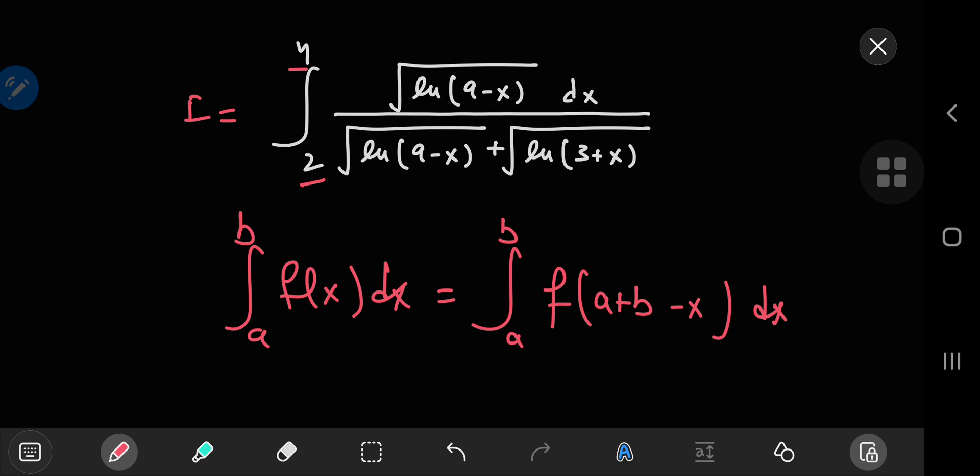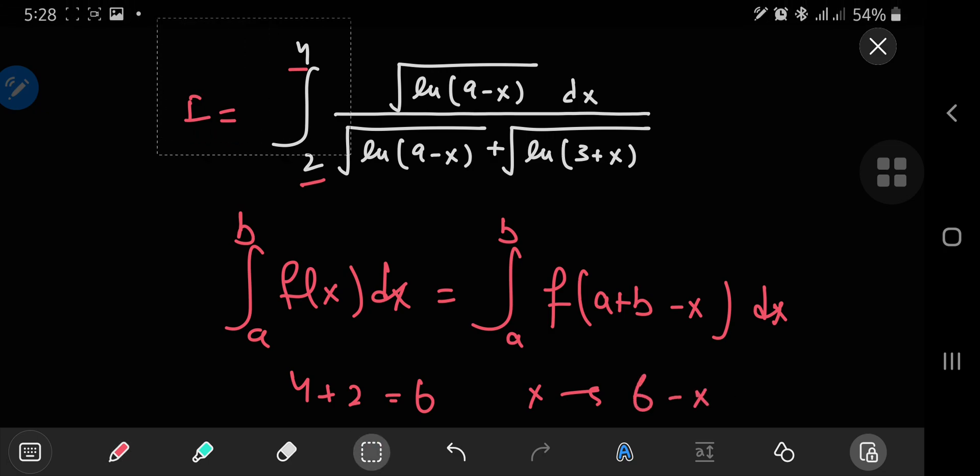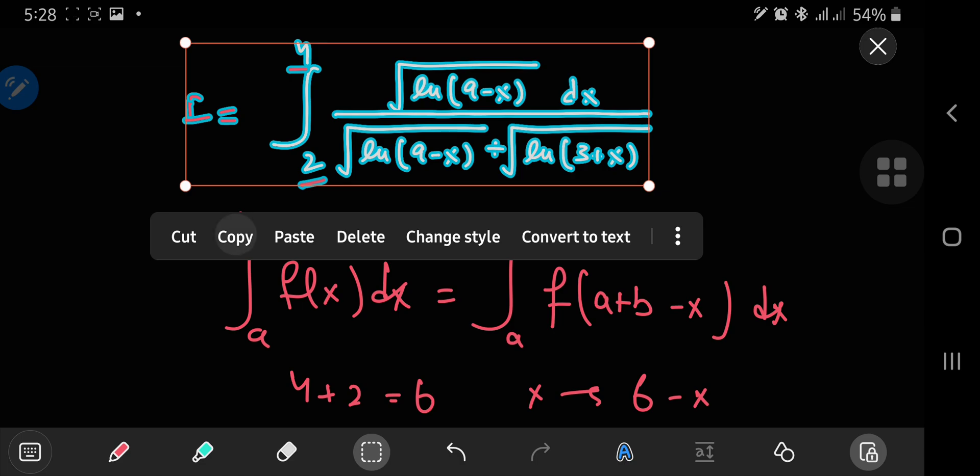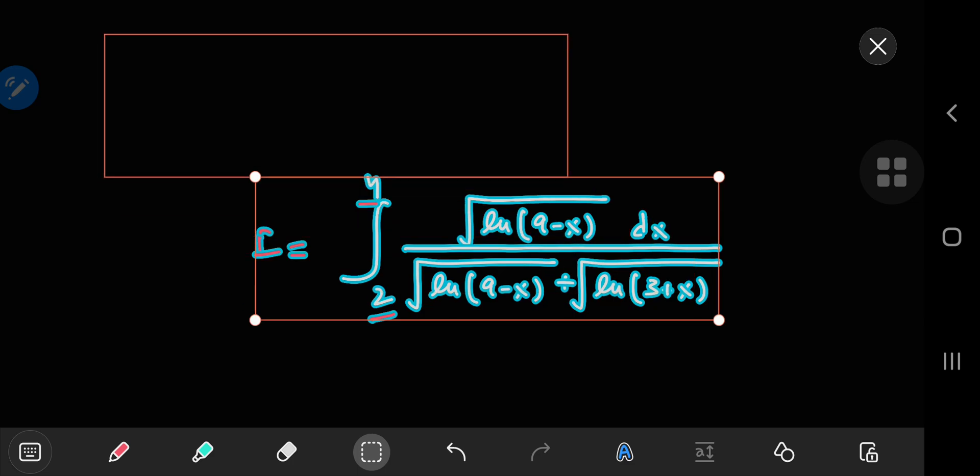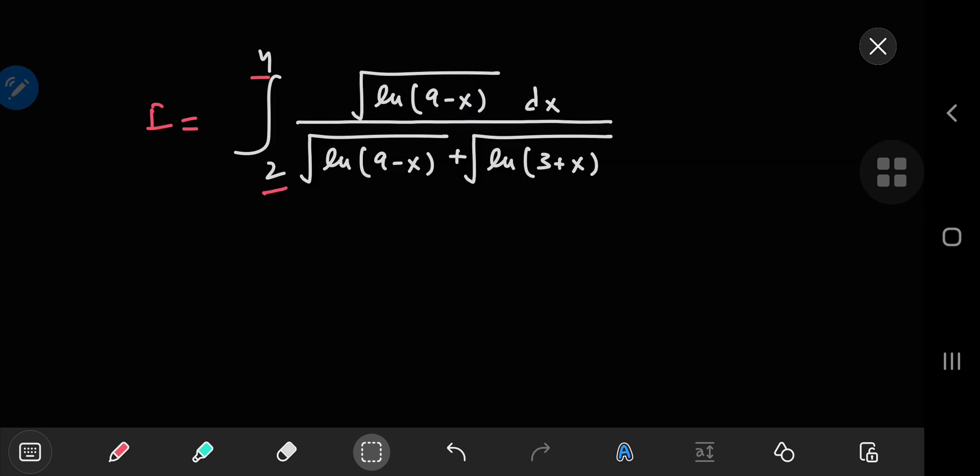So here the upper and lower limits add up to 6, so I'm now going from the x world to the 6 minus x world. Let me just move all of this down here. So if this is my integral right now, let me just get rid of these.